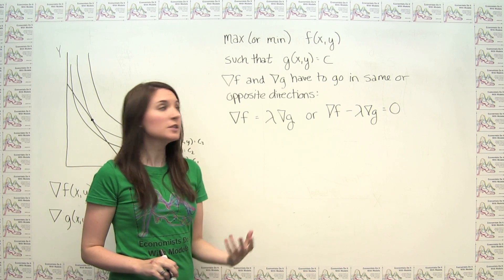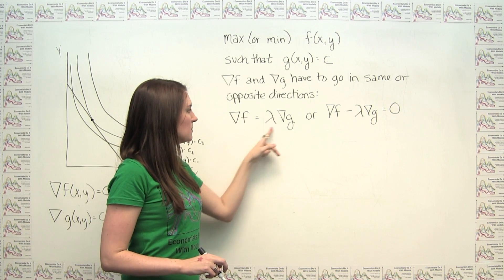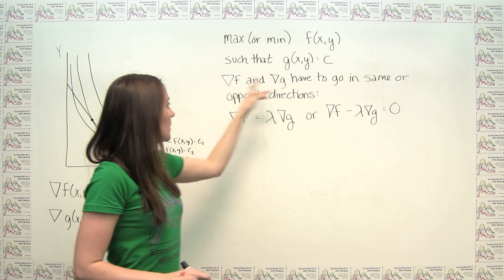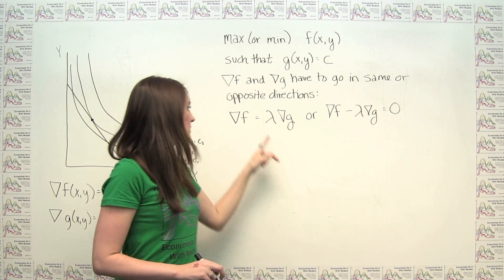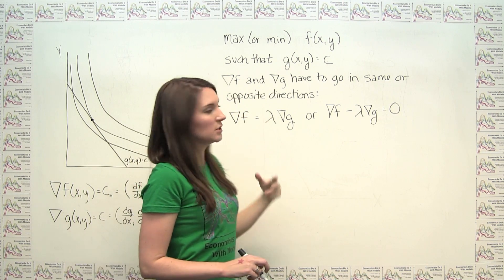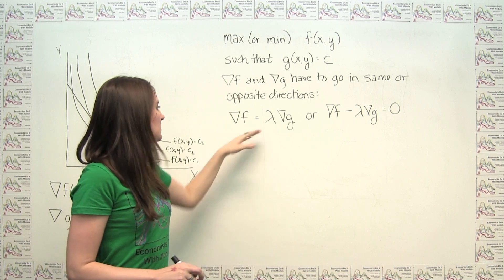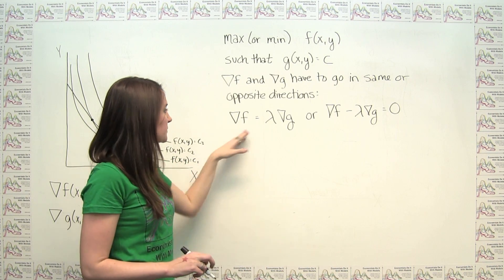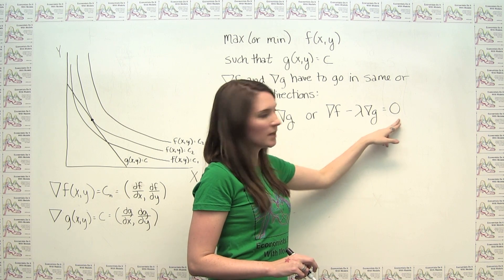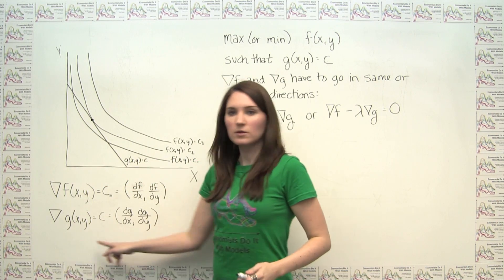If the gradient of f and the gradient of g must go in either the same or opposite directions, it has to be the case that the gradient of f is some scalar multiple of the gradient of g. If they point in the same direction, the scalar multiple lambda is positive; if opposite, lambda is negative. This condition translates to: the gradient of f minus lambda times the gradient of g equals zero.